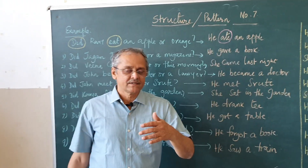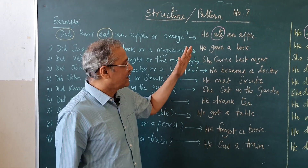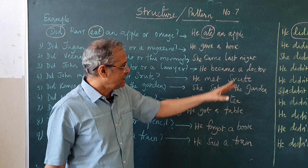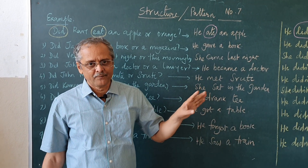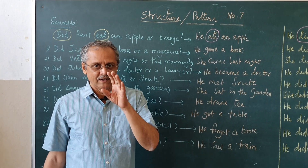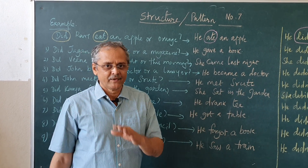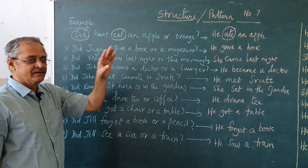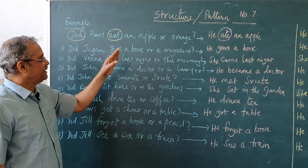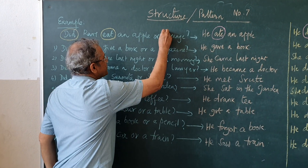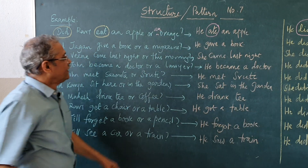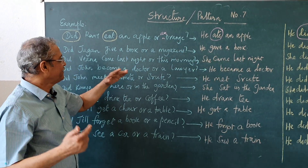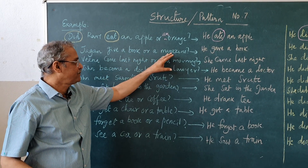In the last structure practice we saw the agreement we call it — when the past tense is used, what comes with 'did.' This is another practice module for you. I will slowly read and give you a gap; you repeat after I read it. Example: Did Ravi eat an apple or an orange? He ate an apple. See here — 'did eat' becomes 'ate.'